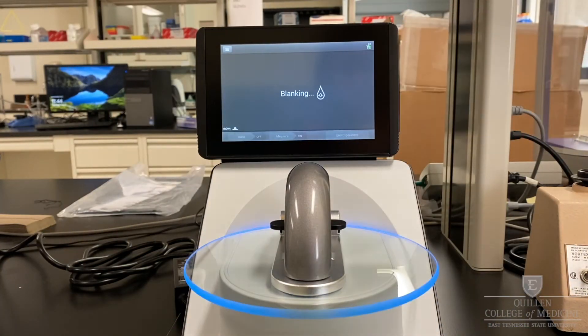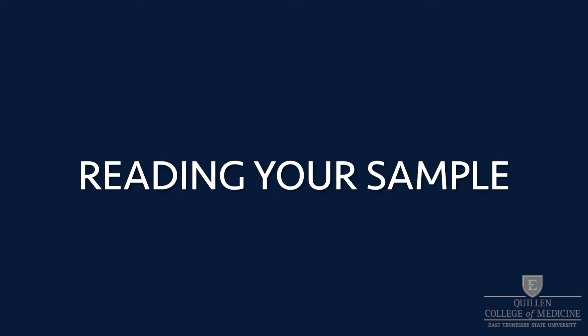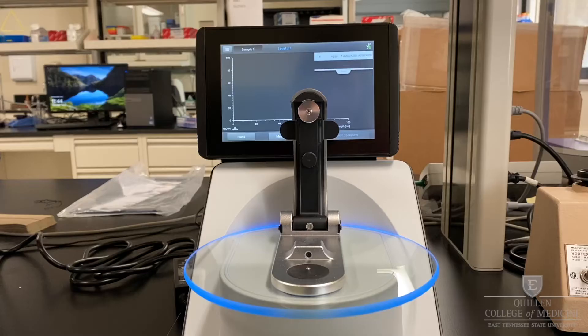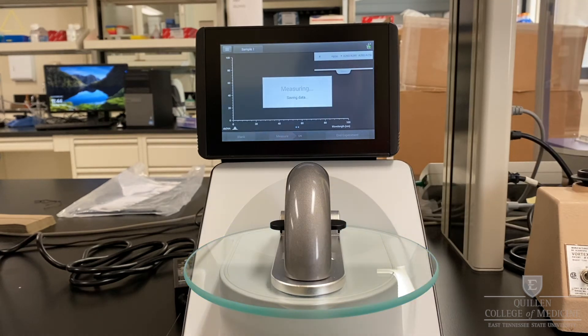Press Blank in the lower left of the screen to begin measuring. Repeat the process with each of your samples. The NanoDrop will automatically begin measuring when the arm is lowered.